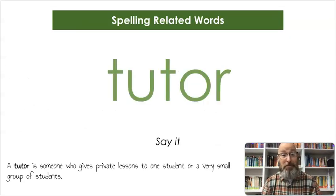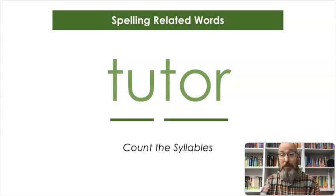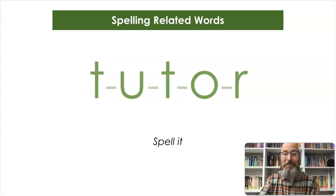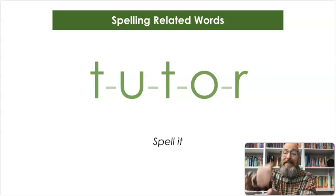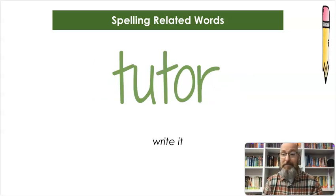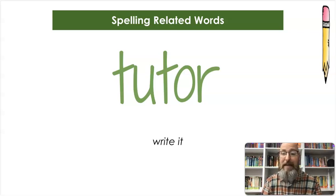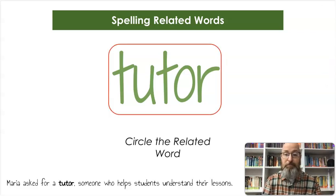Our first word: tutor. A tutor is someone who gives private lessons to one student or a very small group of students. Count the syllables — tutor. Let's spell it: T-U-T-O-R, tutor. And let's write it: T-U-T-O-R. I'm going to circle that whole word. Maria asked for a tutor, someone who helps students understand their lessons.